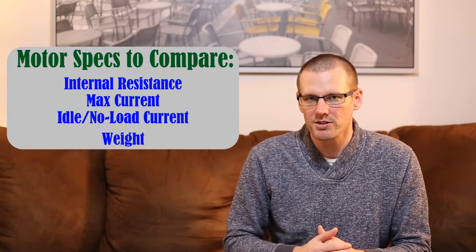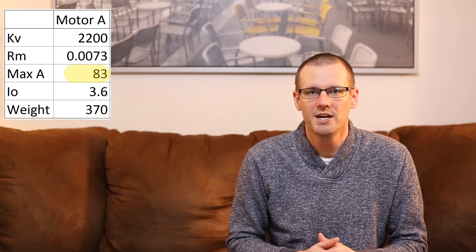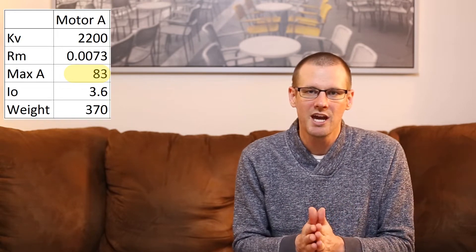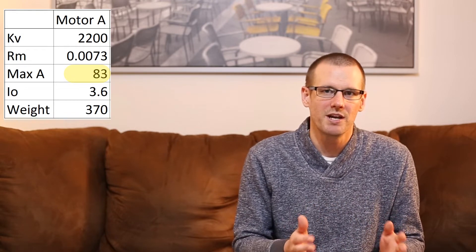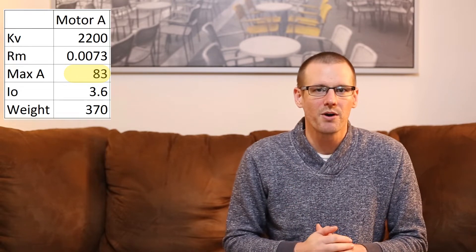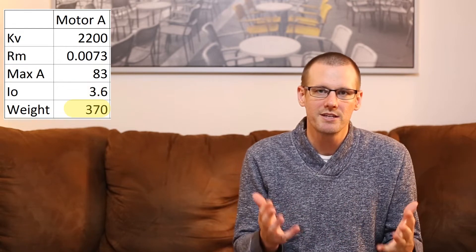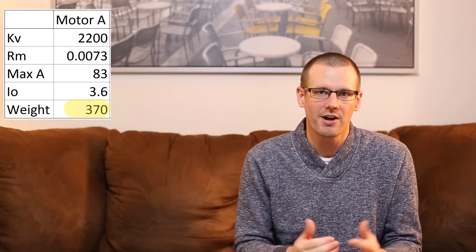Let's start by revealing our first brushless motor. This is brushless motor A, 2200 kV. It has an internal resistance of 0.0073. This is in terms of ohms, the resistance. Then we have a maximum current of 83 amps. Our maximum current is in amps and it is continuous rated power. To me, peak power is useless. We'll talk a little bit more about that very soon here. Our idle current or no load current is sitting at 3.6 amps. The weight of our brushless motor is 370 and that is in grams.